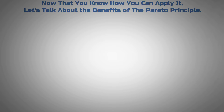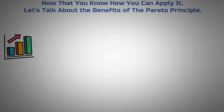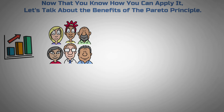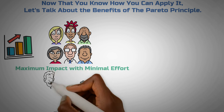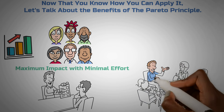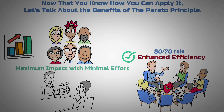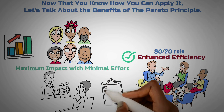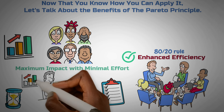Now that you know how to apply it, let's talk about the benefits of the Pareto Principle. First, maximum impact with minimal effort: by focusing on the vital few tasks that generate the most significant results, you can achieve maximum impact with less work, allowing teams to allocate resources more effectively. Second, enhanced efficiency: prioritizing initiatives based on the 80-20 rule enables teams to work more efficiently — concentrating efforts on the most impactful tasks avoids wasting time on less critical activities, leading to increased productivity and faster progress toward goals.